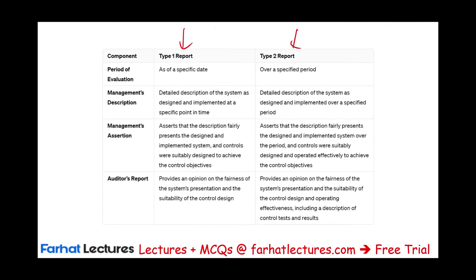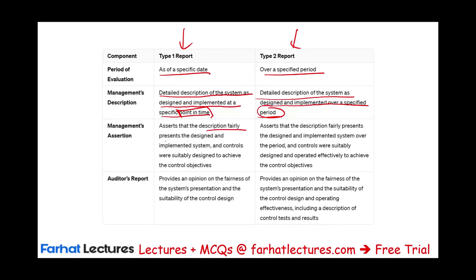Let's review Type 1 versus Type 2. Type 1 is as of a specific date; Type 2 is over a period of time. Type 1 includes a detailed description of the system as designed and implemented at a specific point in time. Type 2 includes a detailed description of the system as designed and implemented over a specific period. For management assertion in Type 1, management asserts that the description fairly presents the system and that the designed and implemented controls were suitably designed to achieve the control objectives.